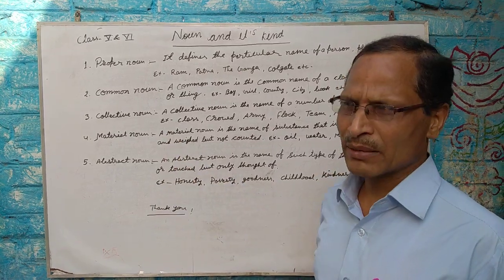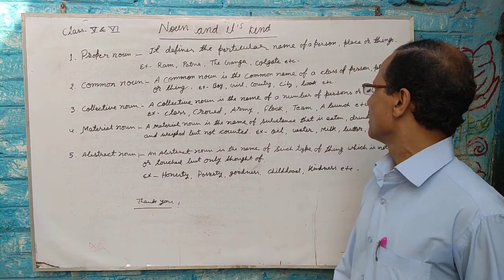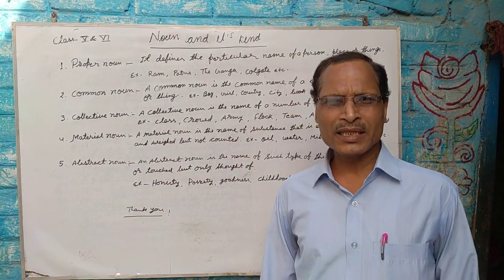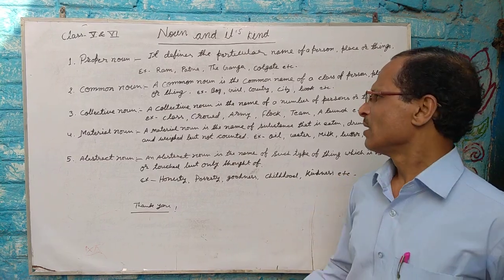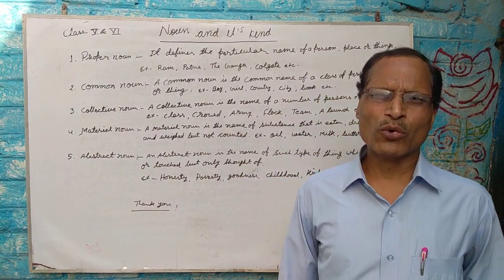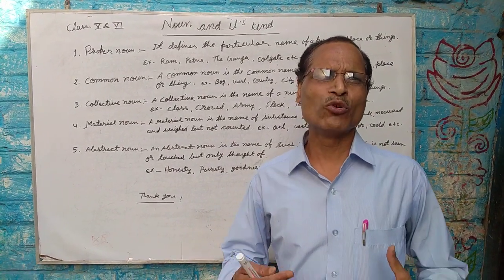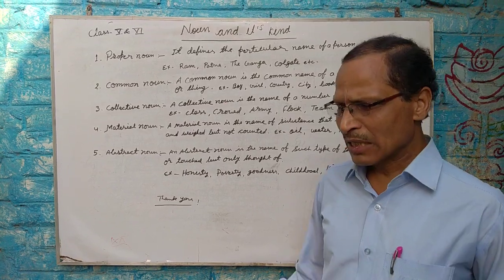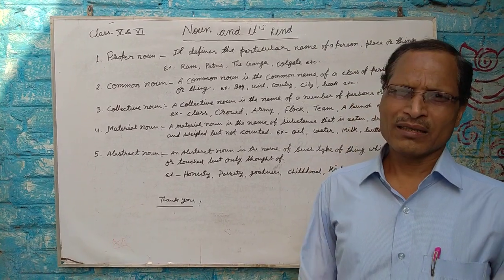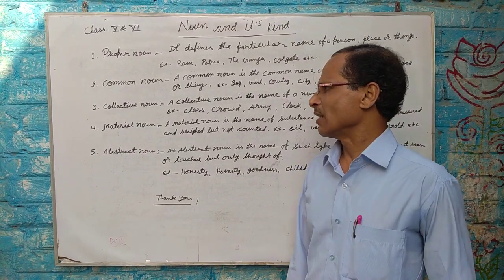तीसरा collective noun। Collective noun is the name of persons or things taken together as a group. इसका मतलब होता है कि collectively, यानी समूह में किसी व्यक्ति, स्थान या वस्तु का बोध होता है। For example, 'class' — class में बहुत से students होते हैं, इसलिए 'class' को हम collective noun कहते हैं।